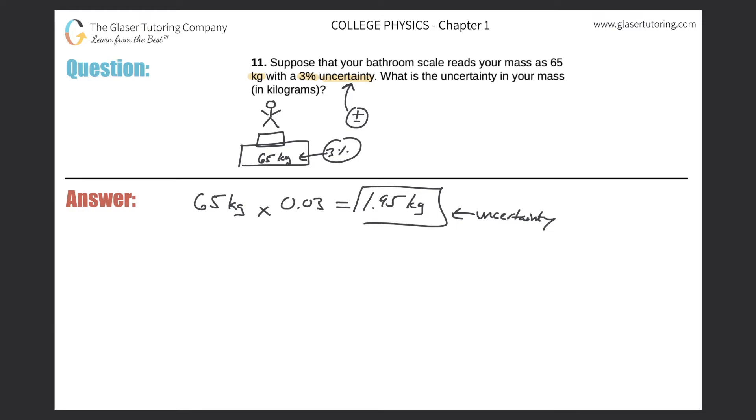Now, remember, uncertainty implies a plus or minus. So the only thing that I need to add into this value of the uncertainty is the plus or minus sign, because maybe it's plus 1.9 kilograms, or maybe it's minus 1.9 kilograms. So let me add that in now. So kilograms. So this is now the uncertainty.